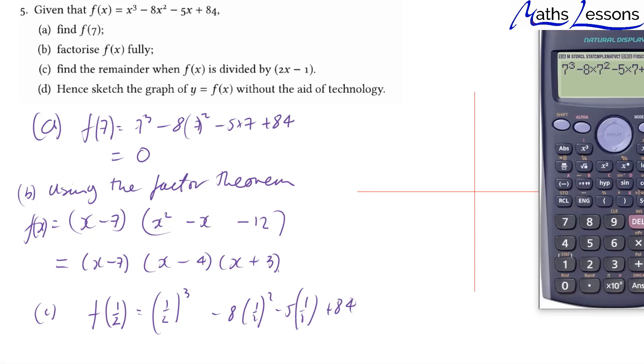We'll grab our calculator for this one. We do 0.5 to the power of 3, minus 8 times 0.25, minus 2.5 (that's half of 5), plus 84. That gives us 6 and 3/8.